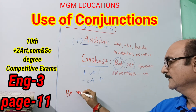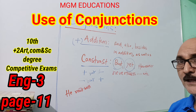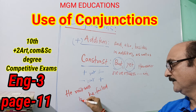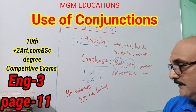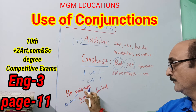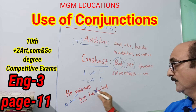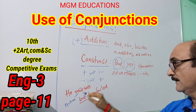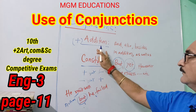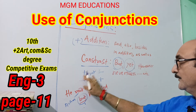For example: He read well, but he failed. Here the two ideas go against each other — reading well is positive, failing is the reverse. So we have to use the conjunction of contrast to connect these two sentences.